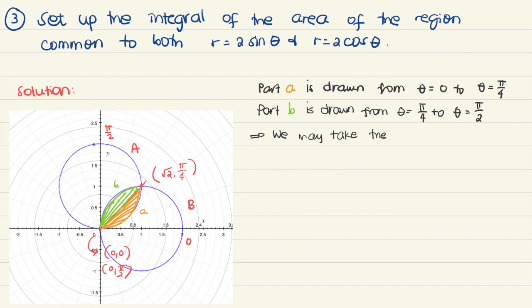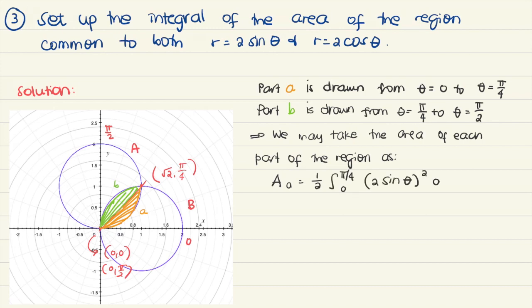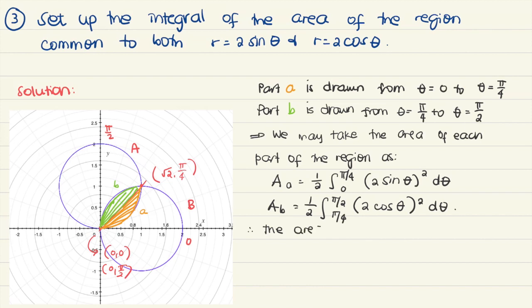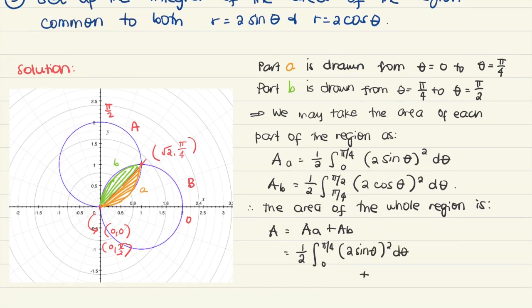We take the area of part A and the area of part B, then add them together. The area of part A is half the integral from 0 to pi over 4 of 2 sine theta quantity squared d theta. The area of part B is half the integral from pi over 4 to pi over 2 of 2 cosine theta quantity squared d theta. The area of the whole region is just the sum of these two integrals.